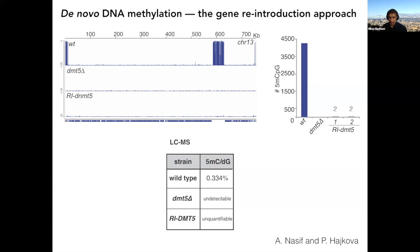We also did atom-sensitivity mass spectrometry, done with Petra Hajkova in London, which quantified by mass spec the percentage of 5-methylcytosine. Wild type: 0.334%. DNMT5 knockout: nothing. Reintroduced DNMT5: Petra saw a tiny bit, but it was below the quantification limit — consistent with the rare de novo sites we observed.